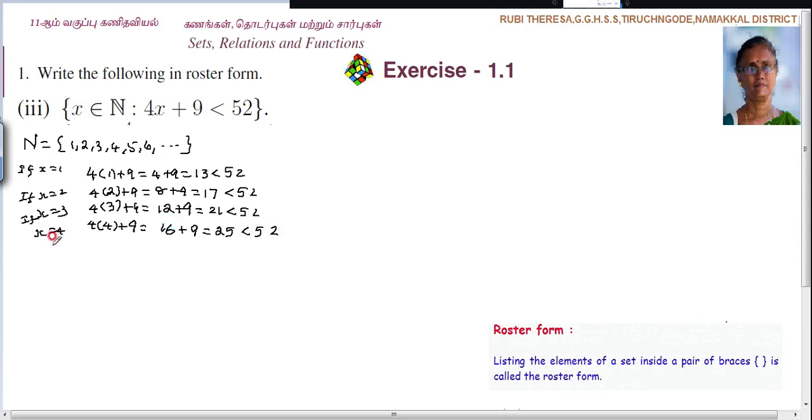Next x equal to 5. 4 into 5 plus 9. 4 5's are 20. 20 plus 9, 29, which is less than 52. Next x equal to 6. 4 6's are 24 plus 9, that is equal to 33, less than 52.